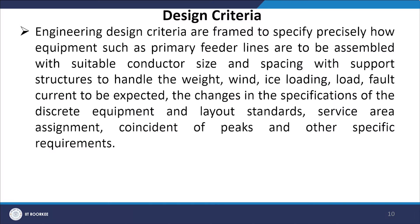Engineering design criteria specify precisely how equipment such as primary feeder lines are to be assembled, with suitable conductor size and spacing, support structures to handle weight, wind and ice loading, load, and fault current. Changes in specifications cover discrete equipment, layout standards, service area assignment, coincident peak and other specific requirements. The power utility shall prepare an operational code to incorporate all criteria and standards of distribution system operation.